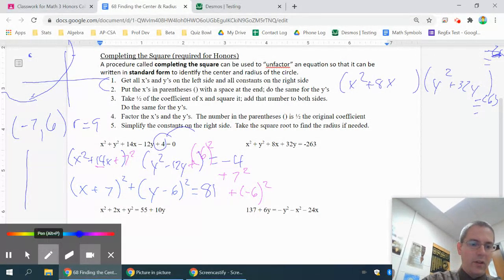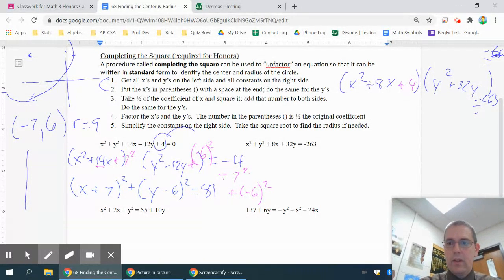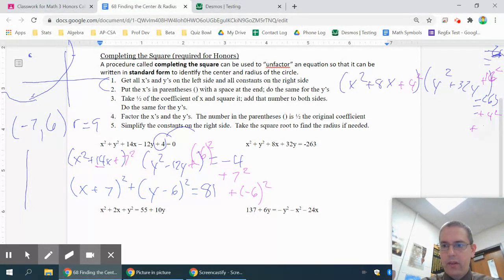Now, the next thing I'm going to have to do is I'm going to have to add half of those coefficients squared. So half of the 8 is 4 squared. Put it there and put it there. And then half of 32 is 16 squared. Well, I'm evidently too close to the edge of my screen to write very well. I'm sorry about that. So plus 16 squared.